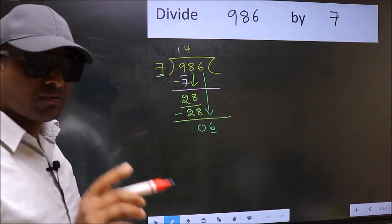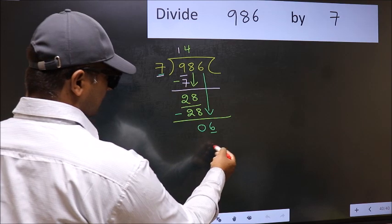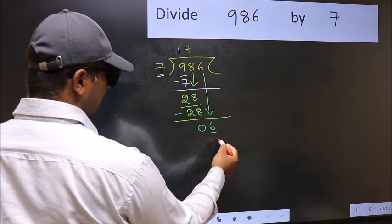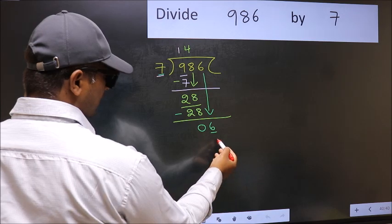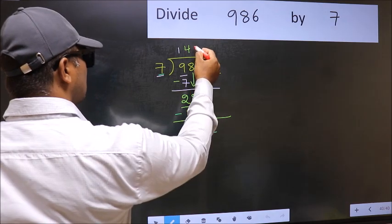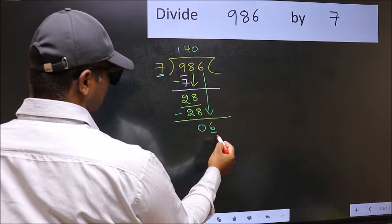Instead, what you should think of doing is, what number should we take here? If I take 1, we will get 7. But 7 is larger than 6. So what we should do is, we should take 0. So 7 into 0, 0.